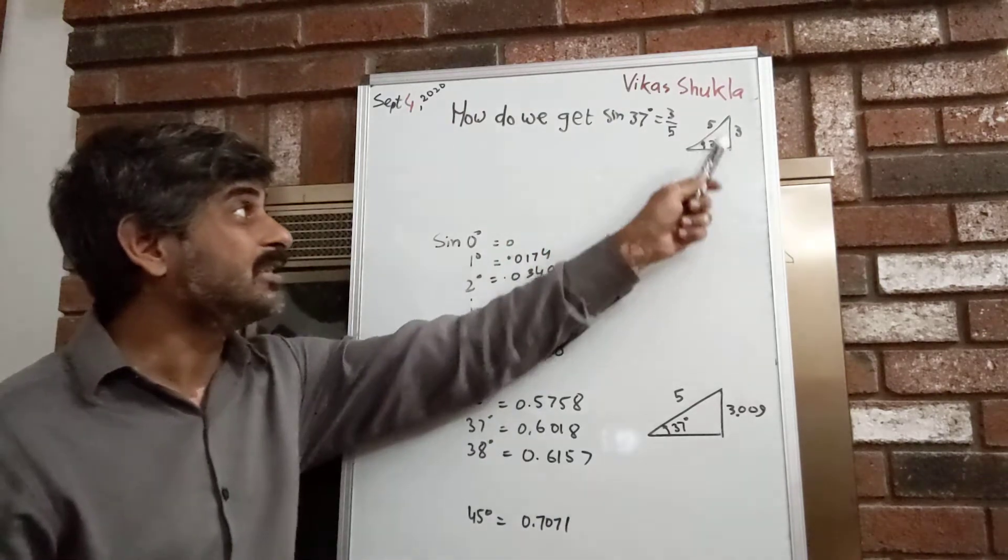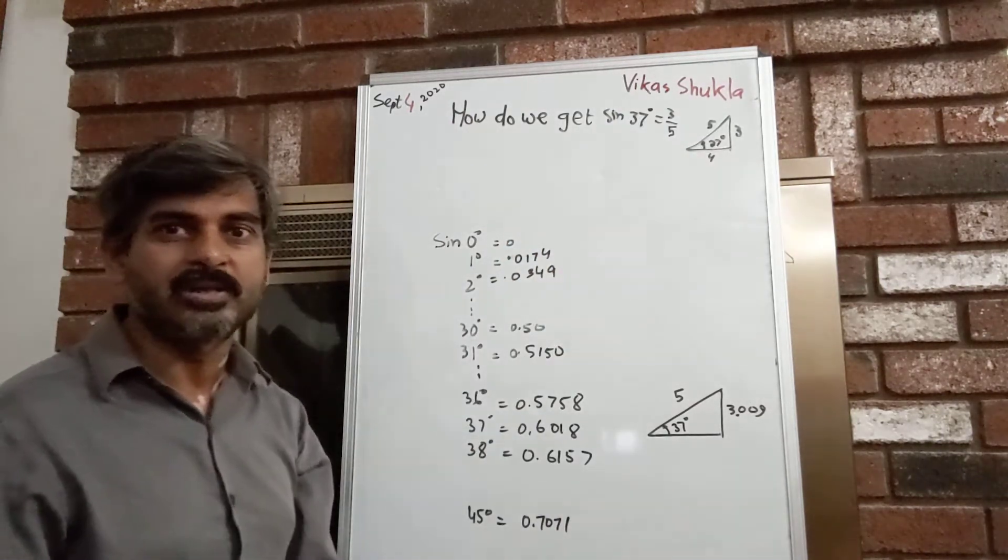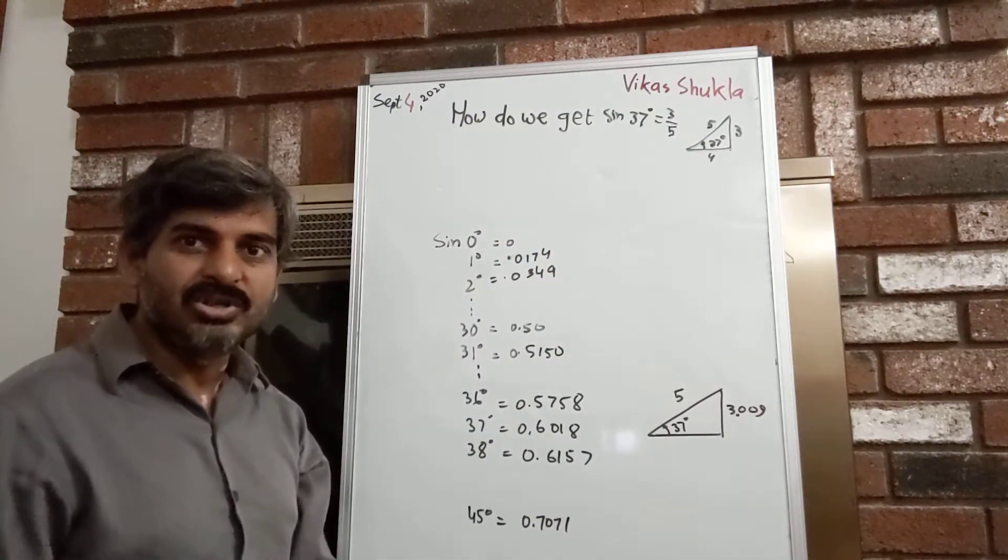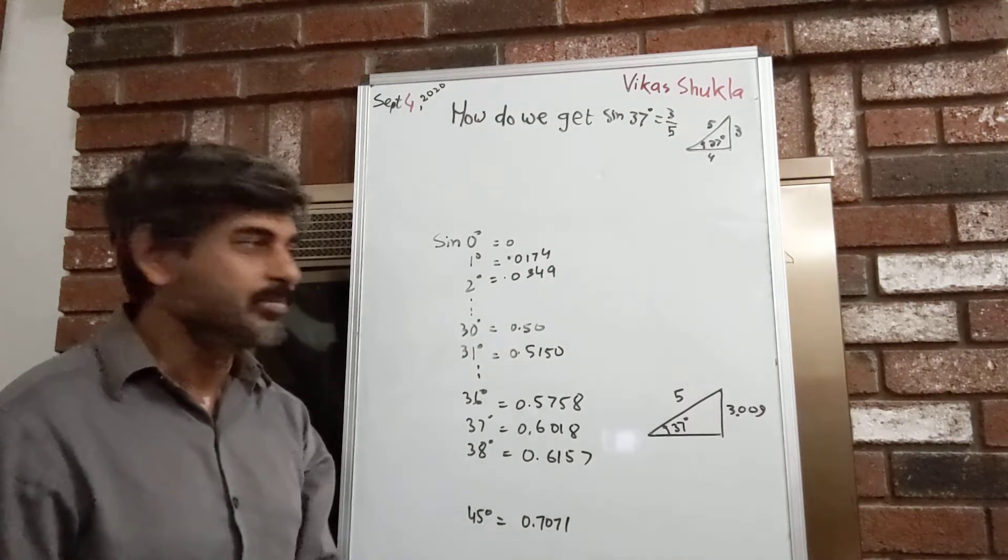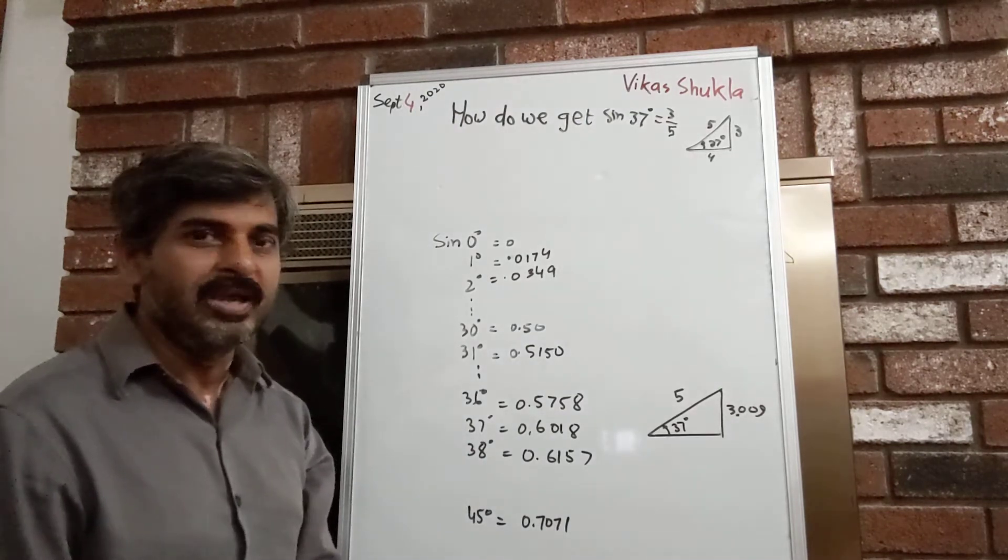So the question was: how do we get these 5, 3, and 4 numbers? Frankly, it's not a precise number—it's just a convenient approximation. How do we get that?